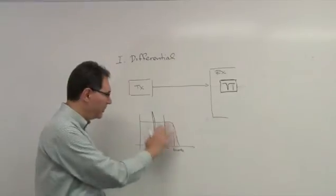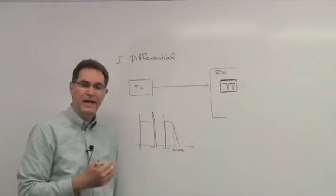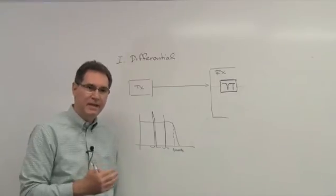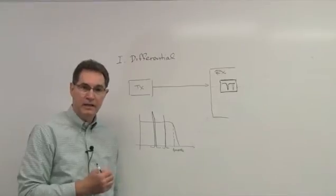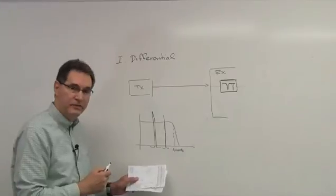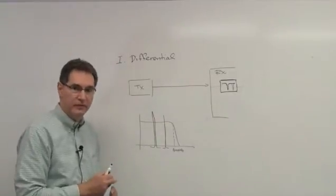However, notching out certain aspects of the spectrum will cause ISI or inter-symbol interference, which then needs to be mitigated or absorbed with a very good equalizer. So this is how the first category works, differential, by putting in these notch filters in the frequency domain.